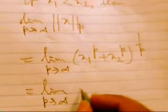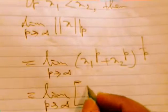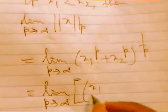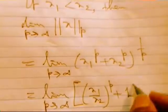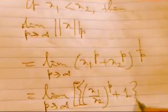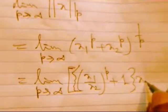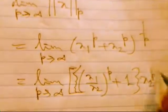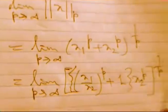Taking this condition, limit as p tending to infinity, we are using (x_1 by x_2) whole to the power p plus 1 in another bracket, times x_2 to the power p, whole to the power 1 by p. Structurally writing in this manner.